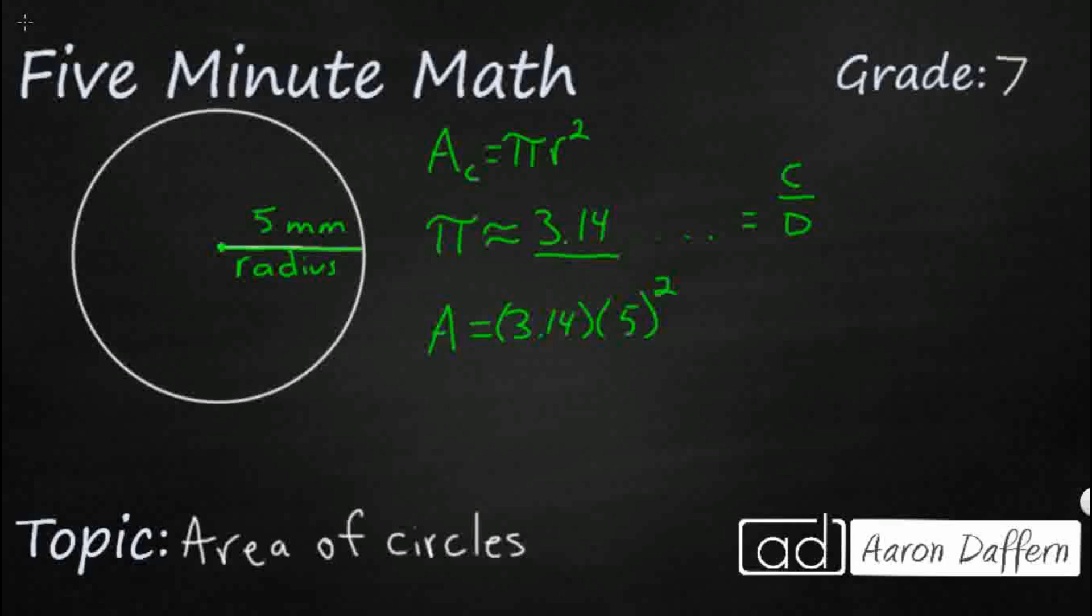Now, the only tricky thing here is 5 squared does not mean 2 times 5. That does not mean double 5. What that means is we're going to take 5, we're going to multiply it by itself 2 times. So the easiest way to view it is just to literally put it out right here, 5 times 5. That's what 5 squared means is 5 times 5. Well, that's fine. That's 25.